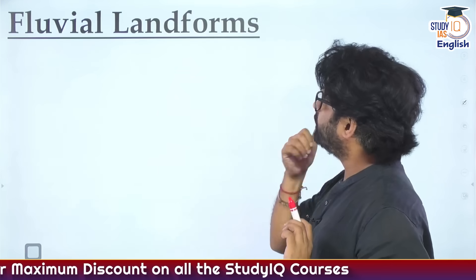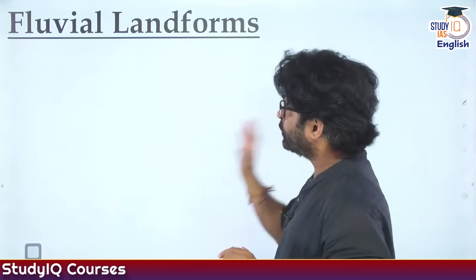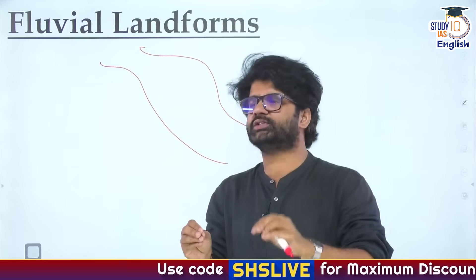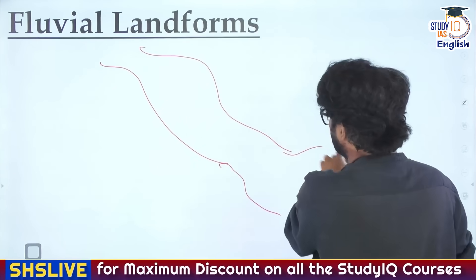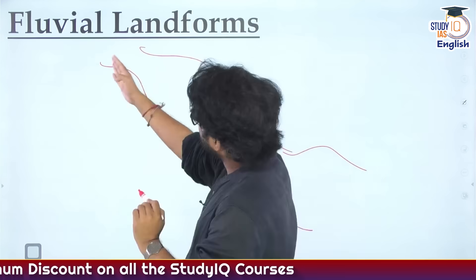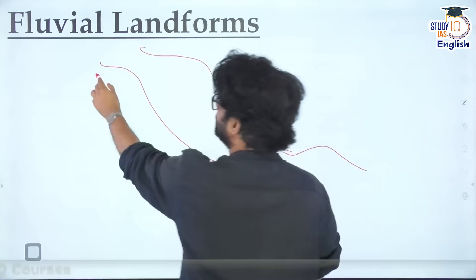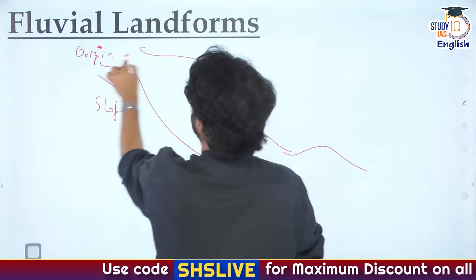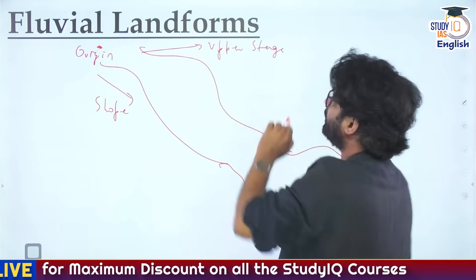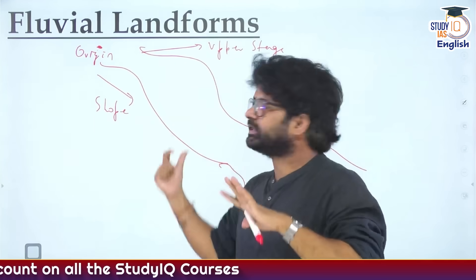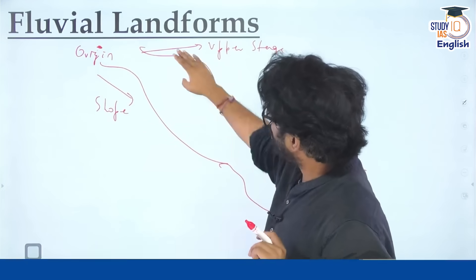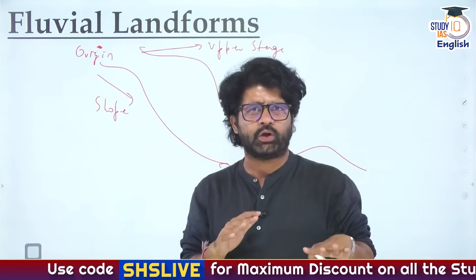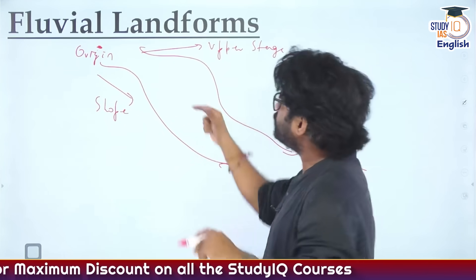Why does this happen with Assam year after year? Let's try to understand it via fluvial landforms. Fluvial landforms are landforms created by rivers. For a river to flow, there has to be a slope. So this is the origin point of the river - the upper stage. The slope here is very steep, the river is coming at a very fast pace, eroding everything in its way and forming features like V-shaped valleys, gorges, and canyons.